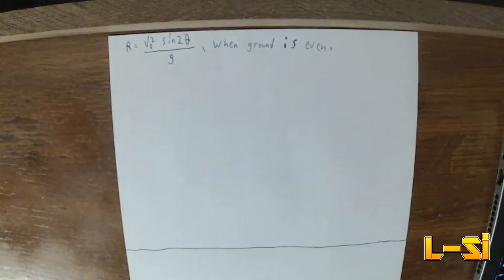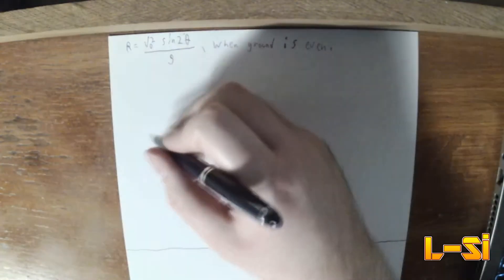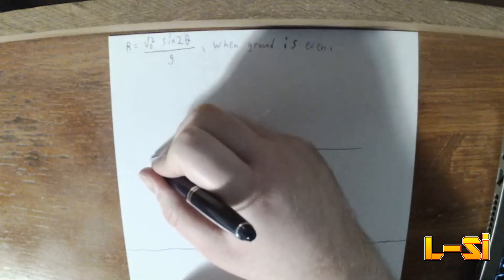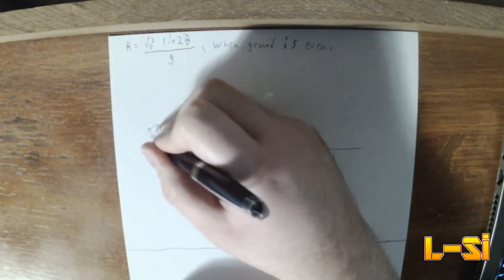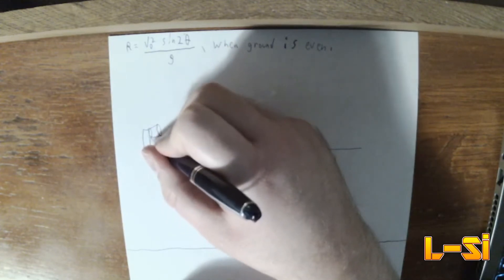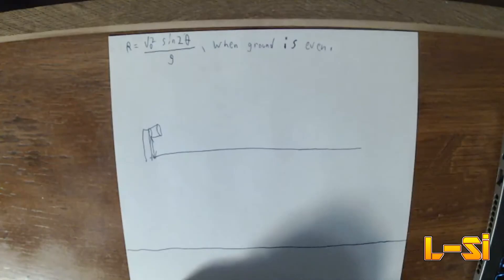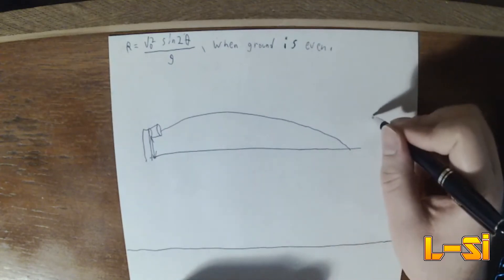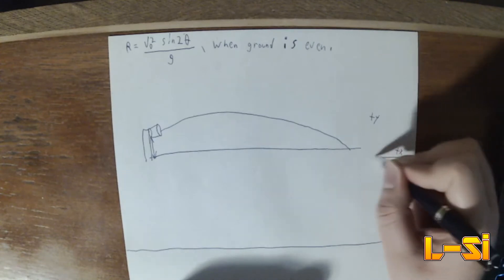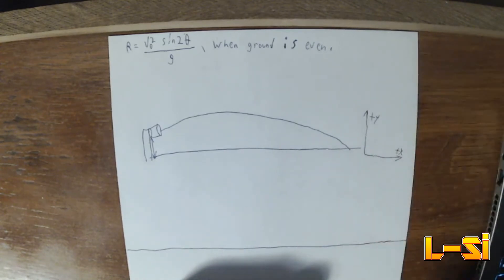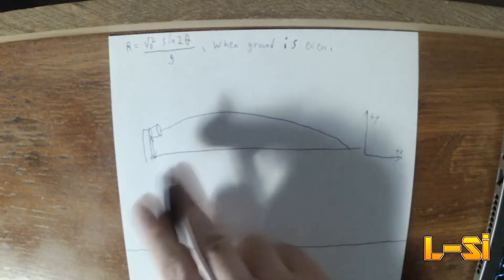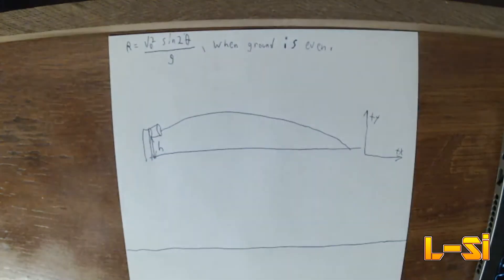So today, I'm going to show you how to deal with the situation of uneven ground. So let's say you have some ground and your gun, your cannon, your whatever, your projectile is being fired from some distance off the ground. So the ground isn't even. Where it lands will be different on the y-axis from where it was originally fired. We're going to call the distance above the ground H.